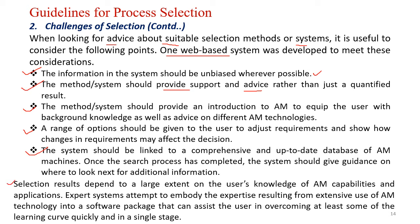Hence, we can conclude that selection results depend to a large extent on the user's knowledge of what an AM machine is capable of and its application. But expert advice or expert systems are attempting to find alternatives — the results from extensive use of AM technology are encoded into a software package. All the information can be gathered and assistance can be provided from these packages for users, overcoming at least some of the learning curve and quickly giving a single stage where most attributes and options can be found and best practice can be implemented.